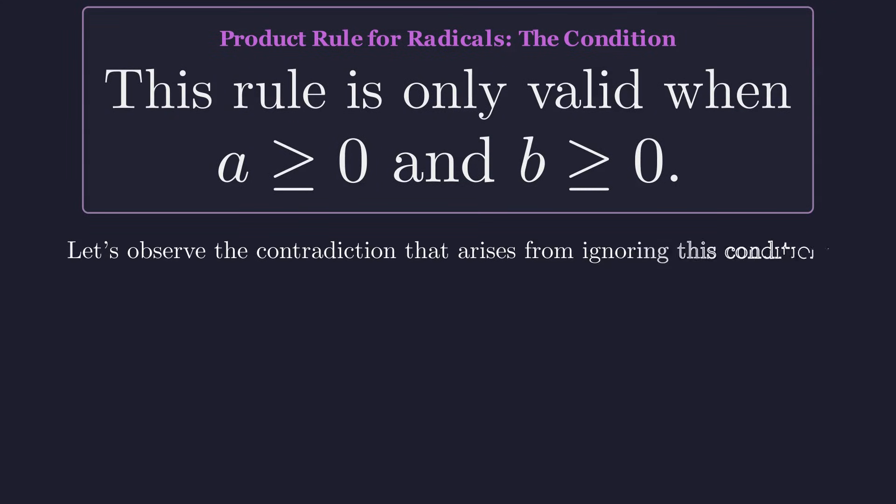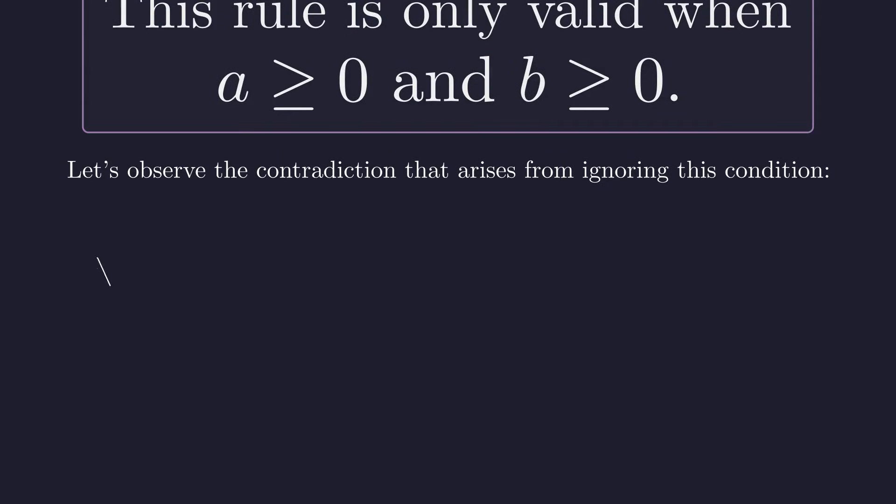Let's see what happens when we ignore this and apply the rule anyway. If we split this radical across the product, we get the square root of negative one times the square root of negative one. Now let's work with the right side using our definition of i. Each square root of negative one becomes i. And i times i is just i squared. So we have i squared, which, remember, equals negative one. So we'd get negative one.